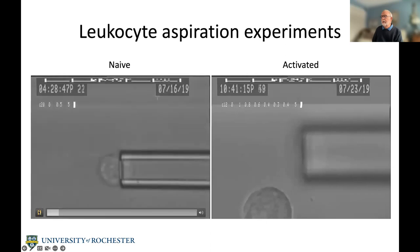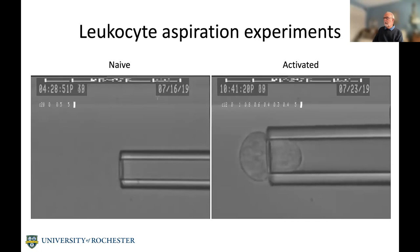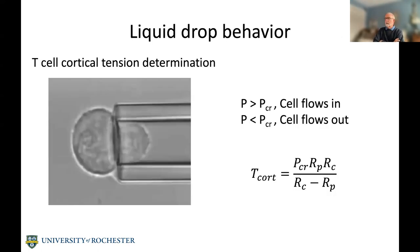On the left is a naive T-cell being aspirated into a micropipette — this is the method we use to characterize the mechanical behavior of these cells. On the right is an activated T-cell. Once these cells enter the pipette, they continue to flow into it under constant pressure, which is a characteristic of a fluid. The prevailing description of leukocytes is that of a highly viscous liquid droplet. Analogous to the surface tension on a water droplet, leukocytes have what's called a cortical tension — a contractile force at the periphery of the cell responsible for their spherical shape at rest. We can measure this tension with a simple mechanical experiment.